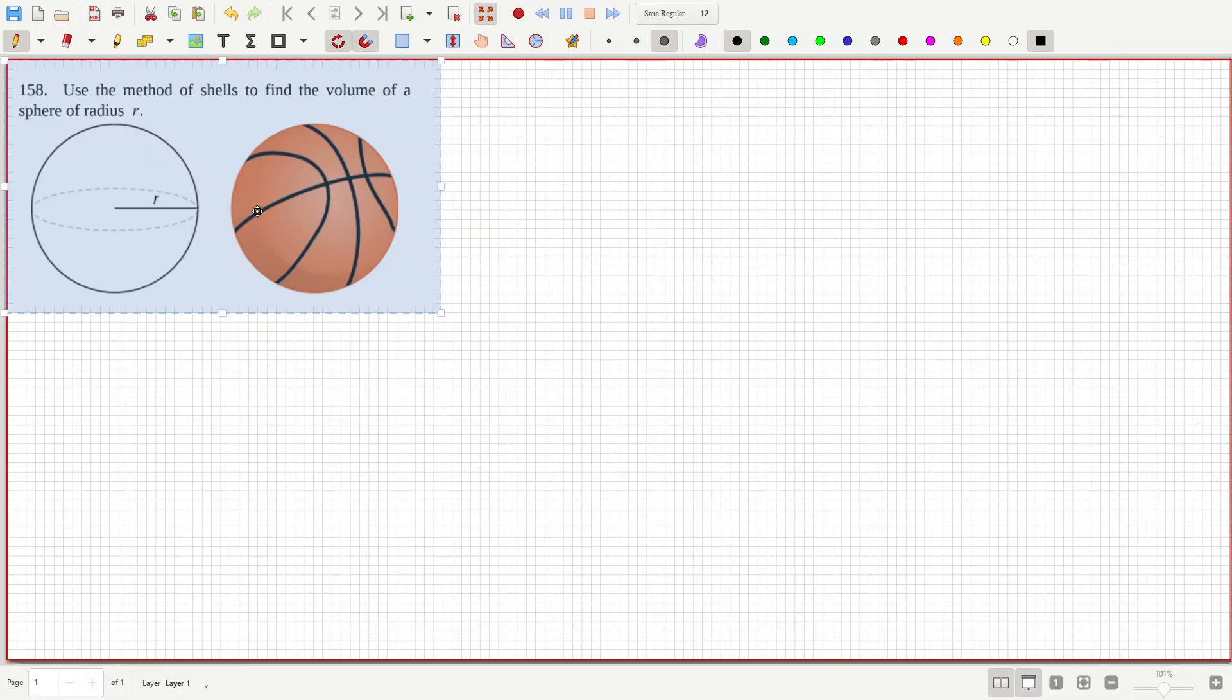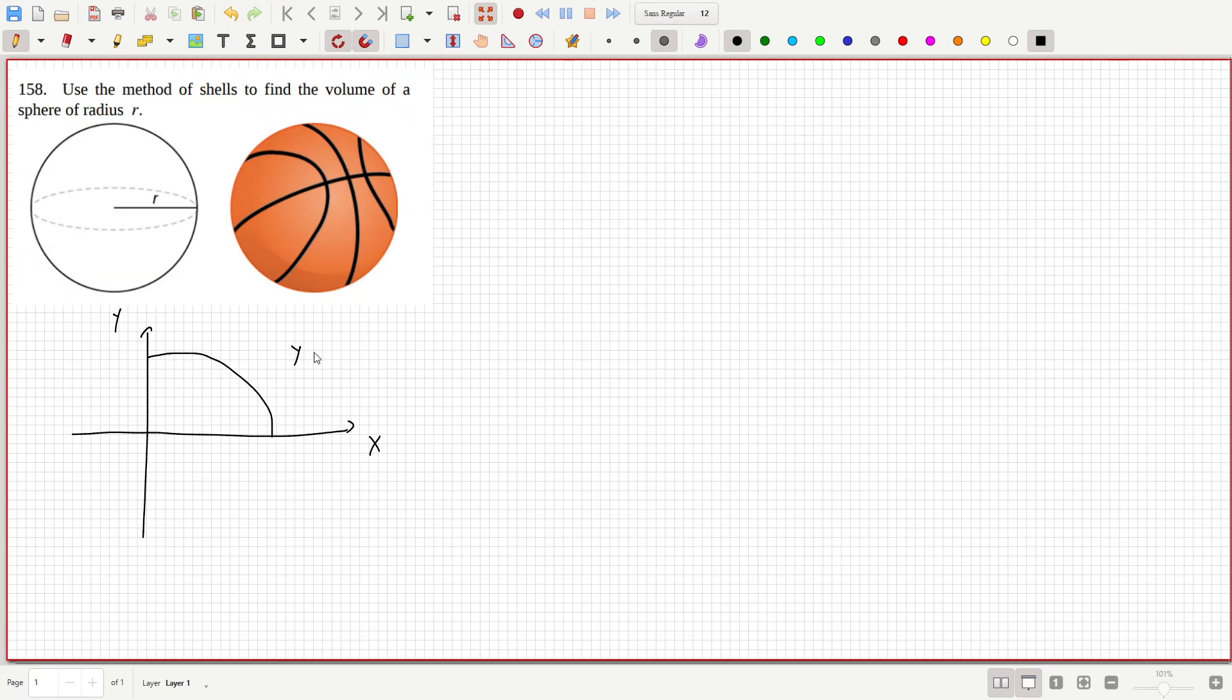Use the shell method to find the volume of a sphere of radius r, so let's just roughly graph this. And there's the curve, so we have y equals root r squared minus x squared.